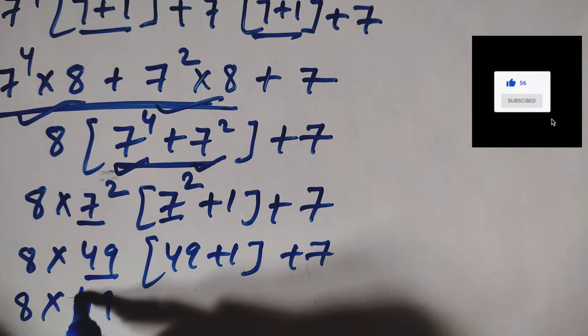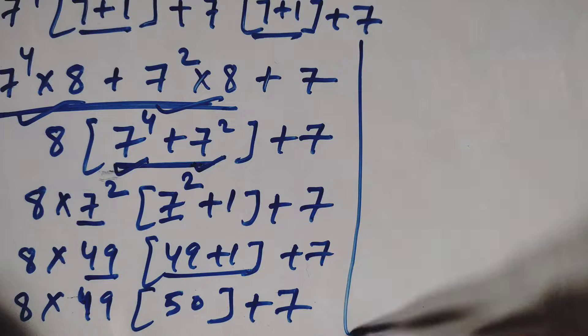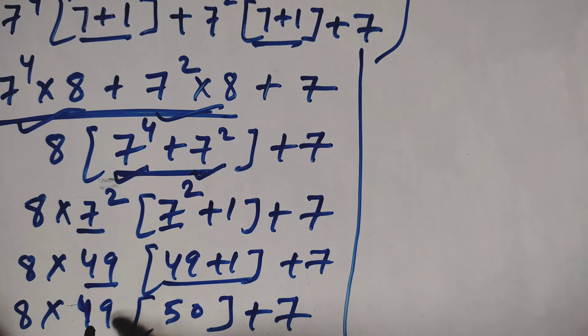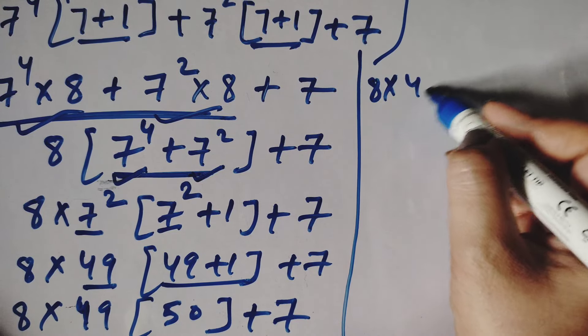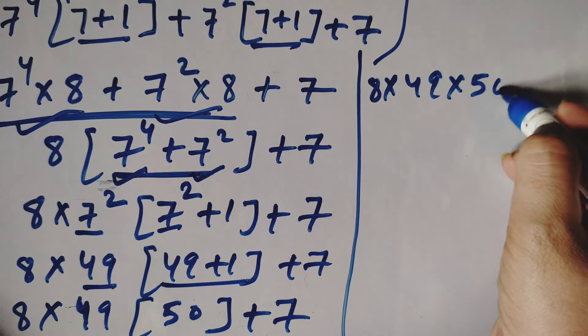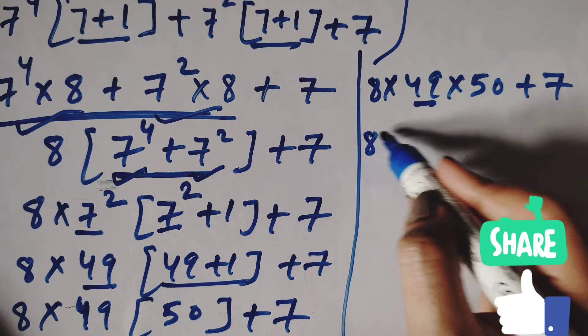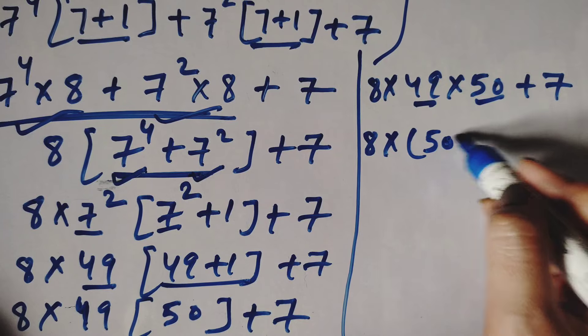Now you can see 8 into 7 squared is 49. 7 squared is again 49 plus 1. So we will create a useful form: 49 in this 49 stays as it is, and 49 plus 1 is 50 plus 7.